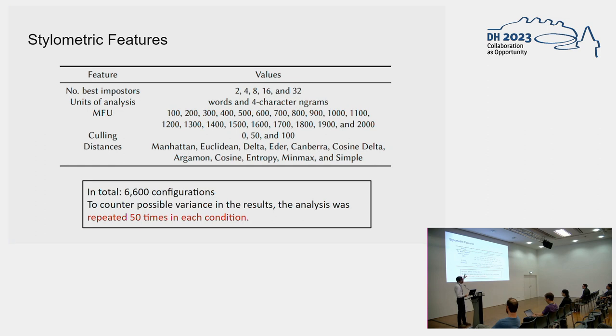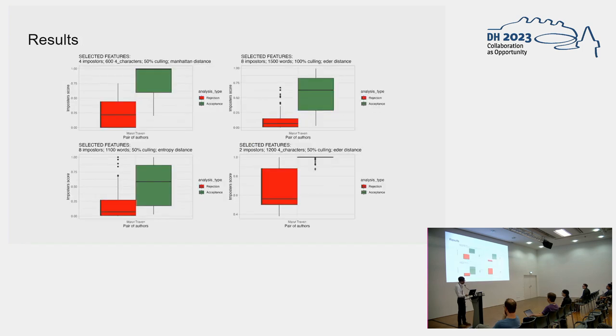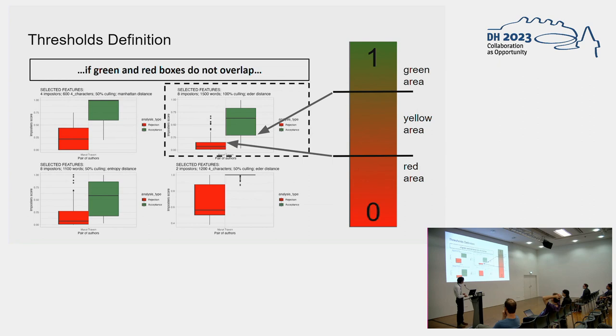We did the analysis by combining many different features. Here is an overview. We tried different numbers of imposters, different units of analysis—words and character n-grams—most frequent units, culling, distances. In the end, we had a total of 6,600 different configurations by combining all of them together. These are the results, or at least a random sample. In the majority of cases, we got what we were expecting. The green area, the acceptance area, is almost always higher than the red area. There are some cases of overlap, but in the majority of cases we had a clear distinction.